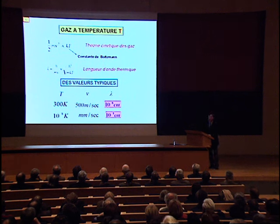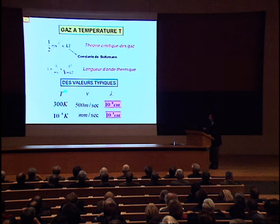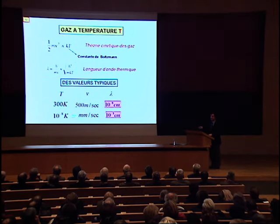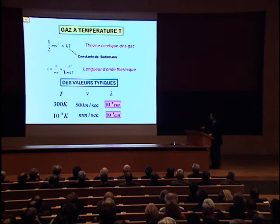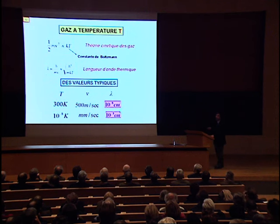Typiquement de l'ordre de 500 mètres par seconde, c'est une vitesse un peu supérieure à celle d'un avion de ligne. Les longueurs d'onde correspondantes sont très petites, de l'ordre de la taille des atomes, et donc beaucoup plus petites que la distance moyenne entre les atomes dans les gaz. Mais si on descend aux températures relevantes pour la physique des gaz piégés ultrafroids, on trouve que la vitesse décroît beaucoup, de l'ordre du millimètre par seconde, et la longueur d'onde devient plus grande.